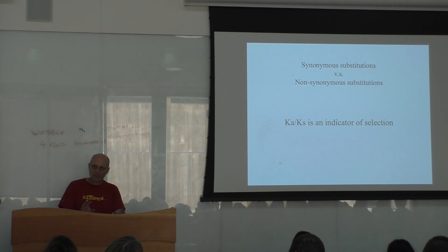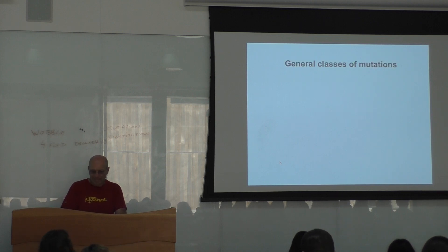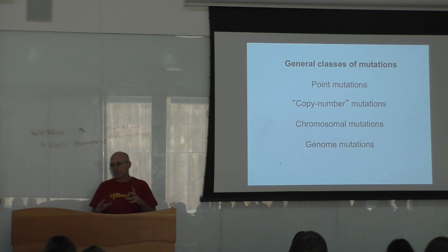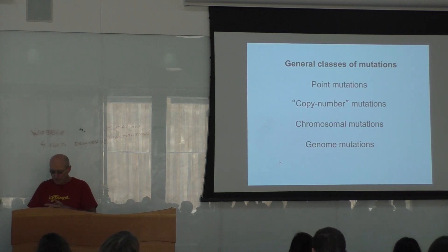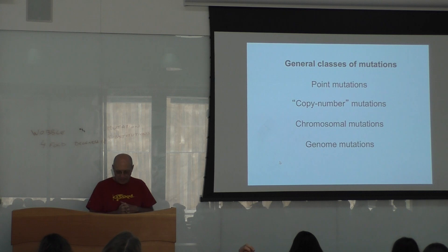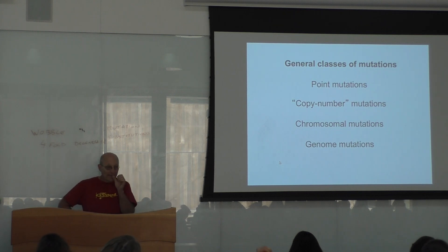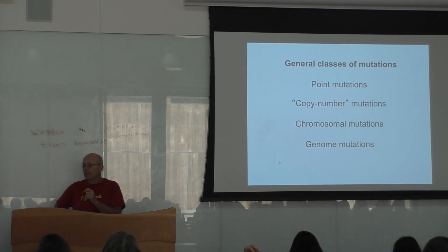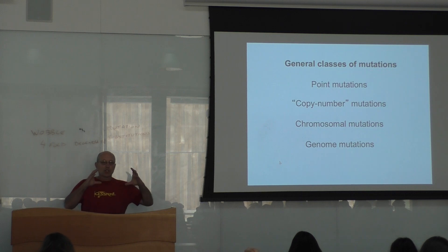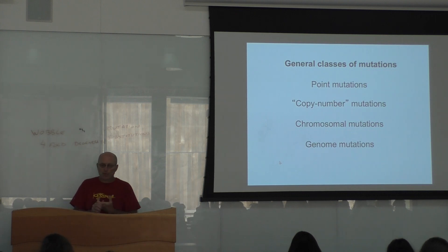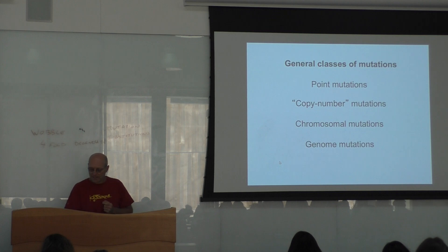That is what I have to say about point mutations. Now we are going to talk about larger-scale mutations that actually play an important role, especially in macroevolution. All that I talked about so far is what is called point mutations — mutations that change a single nucleotide. Copy number mutations change chunks of DNA and produce different repeat numbers. There are also chromosomal mutations and genome mutations.